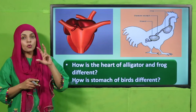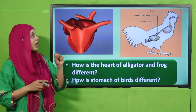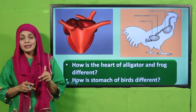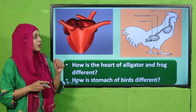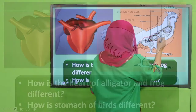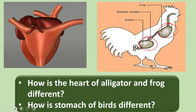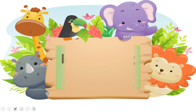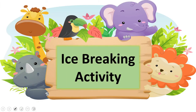Birds have two parts in their stomach: one is the glandular stomach and the other is the gizzard. These are the two parts that make the bird's stomach different from others.